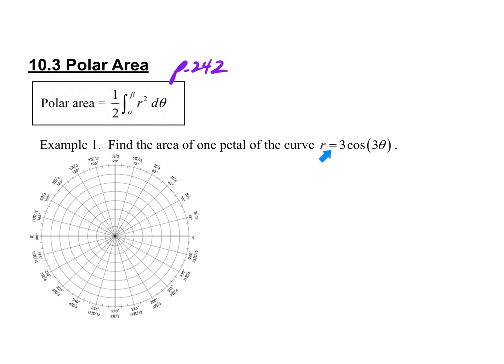The curve is r equals 3 cosine 3θ. What I would do is treat this as a non-calculator problem. We have to come up with all the different important points, like we did in 10.2, draw a graph, and then find the area of one of those petals. If you'd like, go ahead and pause the video, graph your graph — keeping in mind you don't have to graph the entire thing since we're only looking for one petal.